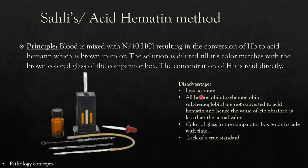Saheli's (acid hematin) method principle: blood is mixed with 10% HCl, resulting in conversion of hemoglobin to acid hematin, which is brown in color. The solution is diluted until its color matches the brown color glass of a comparator box, and the concentration of Hb is read directly. Disadvantages: it is less accurate; not all hemoglobin forms like oxyhemoglobin and sulfhemoglobin are converted, so the value obtained is less than actual. The comparator box glass color tends to fade with time, and there is no true standard available. It is only used in under-resourced laboratories.